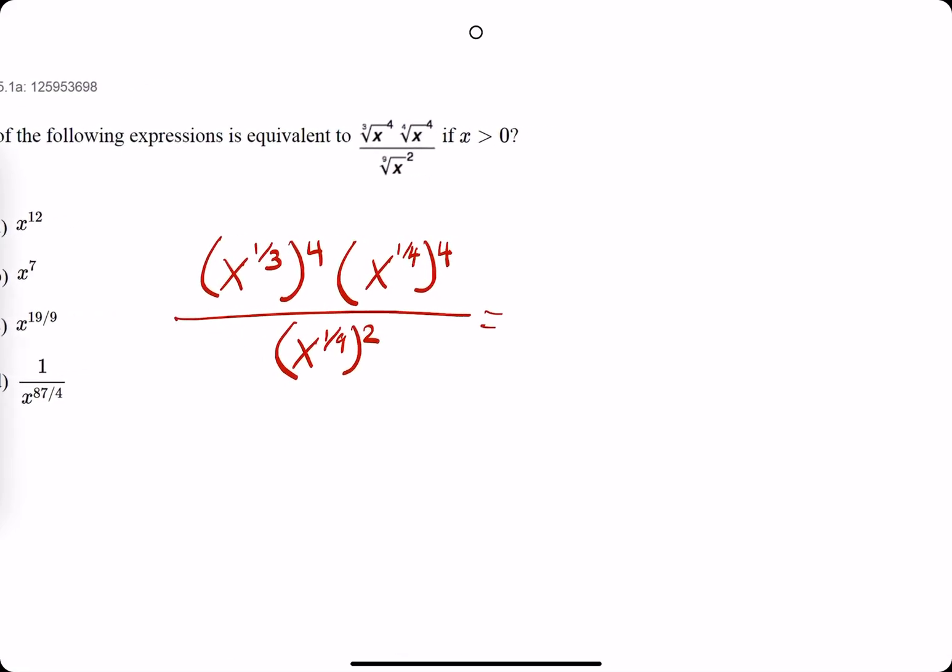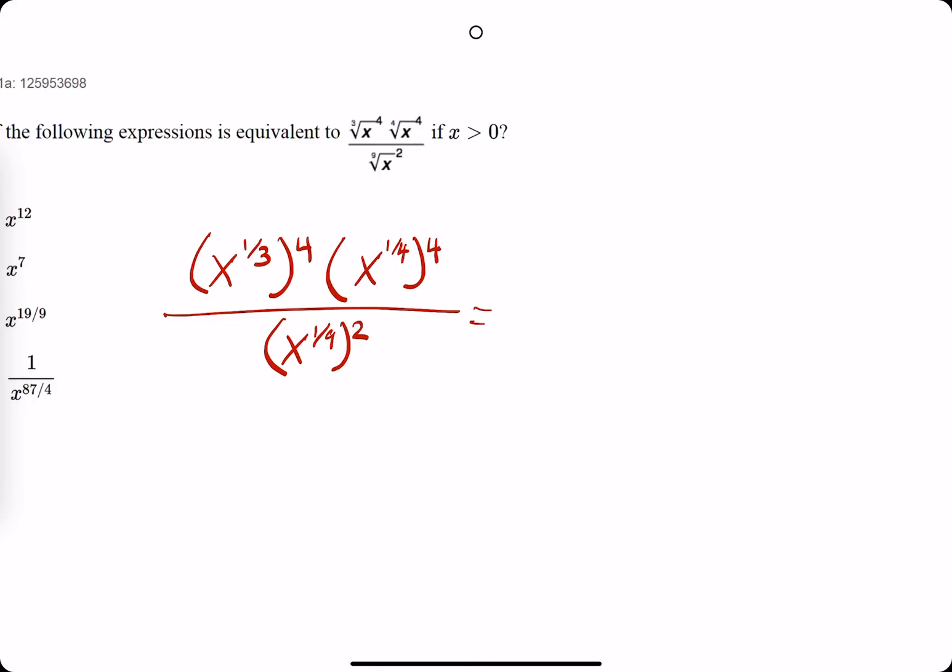Okie, so next step I'm going to do is multiply these numbers that are next to one another. Whenever they're on the same level, as in these one-third and four, we can multiply those values together. One-third times four is four-thirds. One-fourth times four is one, or four-fourths, or just one. So we have x to the one.